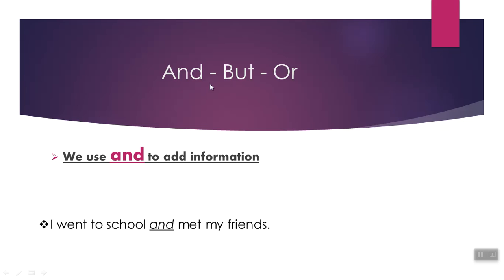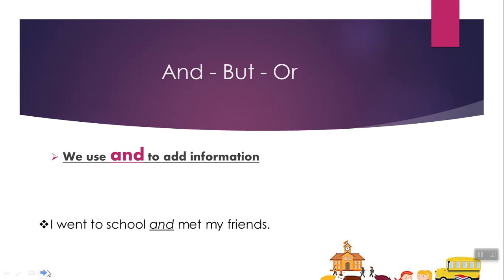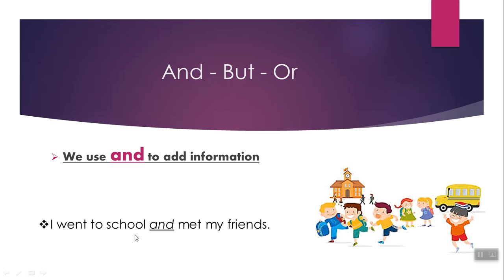Remember, before, in the previous term, we studied 'and', 'but', and 'or'. When do we use 'and'? We use 'and' to add information. For example: I went to school and met my friends.